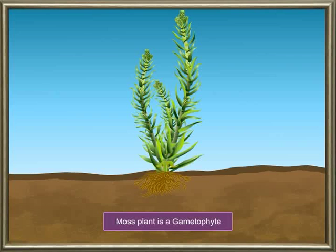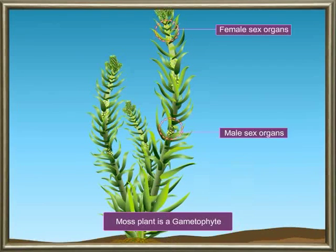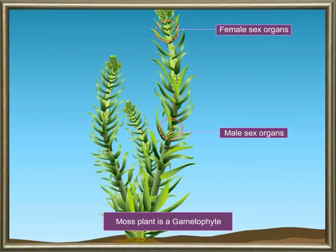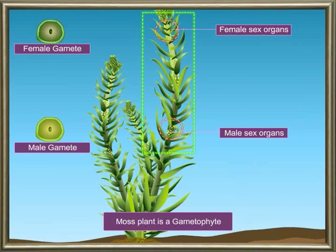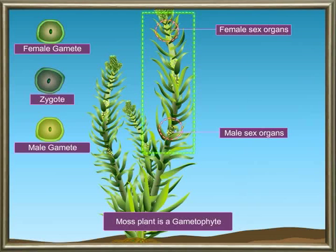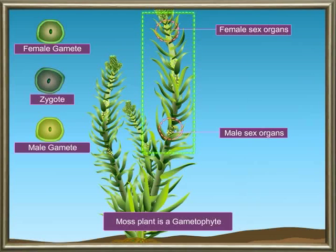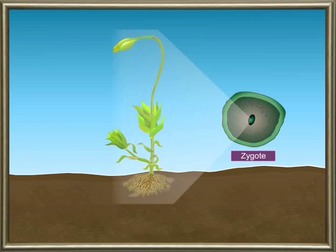The moss plant is a gametophyte. It has male and female sex organs. A cluster of leaves surrounds the sex organs and protects them. The sex organs produce male and female gametes. The fusion of gametes results in the formation of a zygote. This zygote develops into the asexual plant body, which has three parts: the foot, the seta and the capsule.